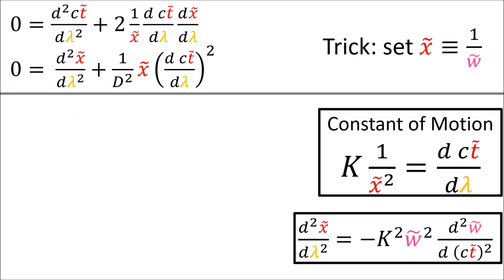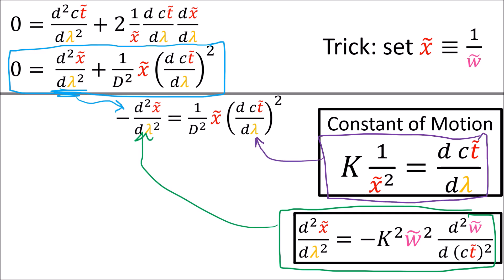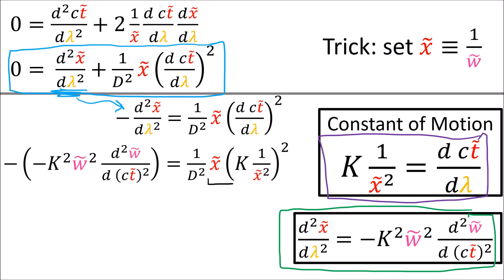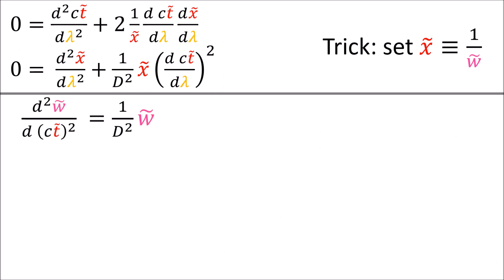We have our constant of motion and now the second derivative of x-tilde. Taking our second geodesic equation, moving the second derivative of x-tilde to the left side, and substituting in our formulas, the x-tilde on top times the square of 1 over x-tilde squared gives us 1 over x-tilde cubed, which is just w-tilde cubed. We can cancel k squared on both sides and divide by w-tilde squared to end up with w-tilde on the right-hand side. Finally, we have a differential equation: the second derivative of w-tilde with respect to ct-tilde is 1 over d squared times w-tilde.